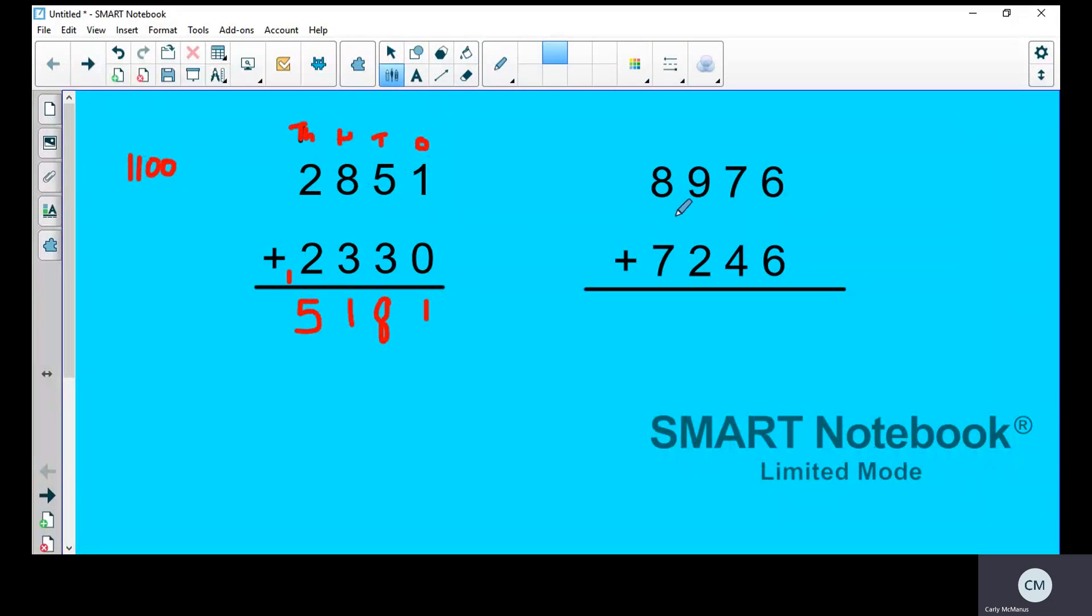So it's the same with this one. Again you've got 8,976 add 7,246. So you put your place value. It's really important that you put your place value, guys, and that your numbers are in the right column.